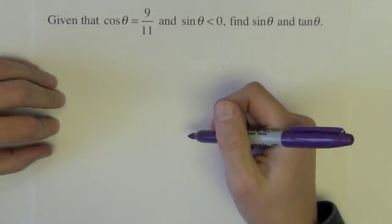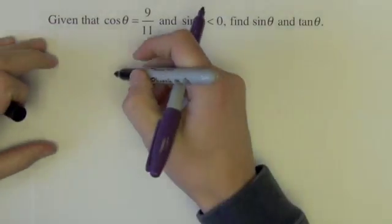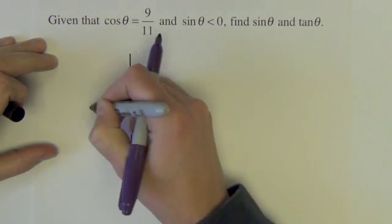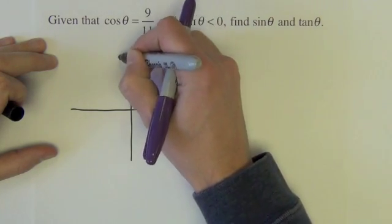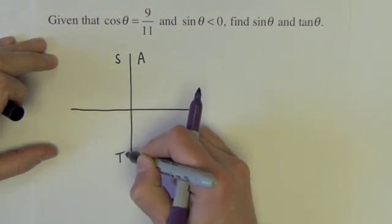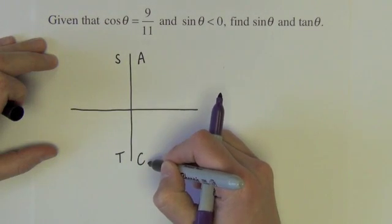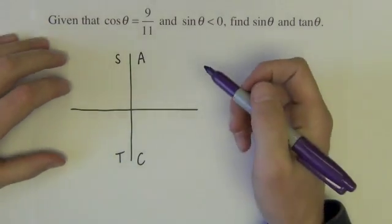The first thing we need to do in solving a problem like this is determine in which of the four quadrants should we construct our triangle. Remember to do that we had the acronym ALL STUDENTS TAKE CALC and it helps us pick the quadrant in which the trig functions are positive.